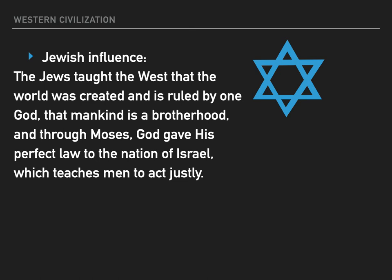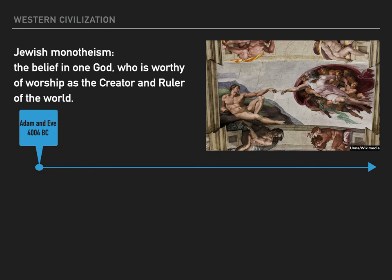The Jews taught the West that the world was created and is ruled by one God, that mankind is a brotherhood, and through Moses, God gave his perfect law to the nation of Israel, which teaches men to act justly. Jewish monotheism is the belief in one God, who is worthy of worship as the creator and ruler of the world. Our timeline starts with Adam and Eve in about 4004 BC.